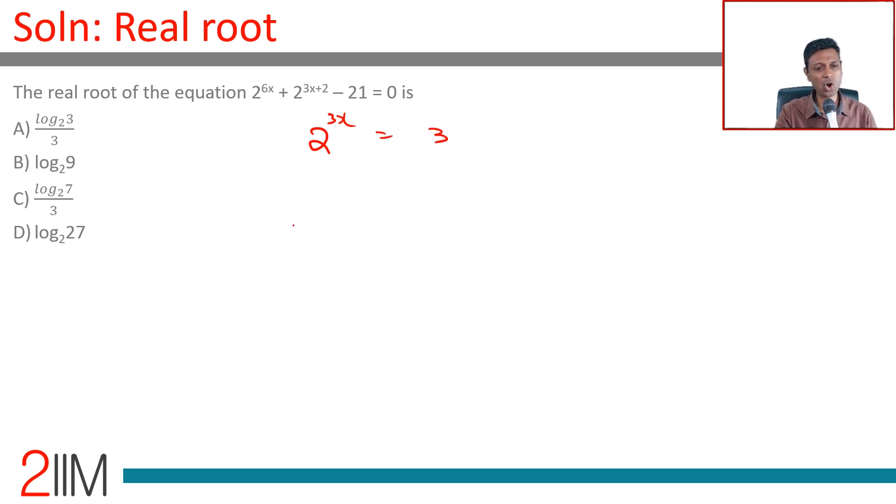Some log is involved. Right away, we take log to the base 2 of 2^(3x) is log₂3. This is 3x = log₂3, or x is one-third of log₂3.